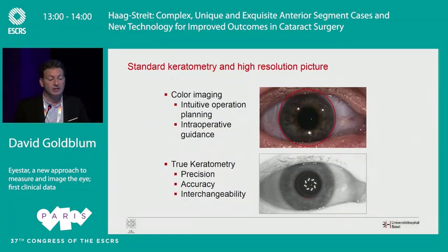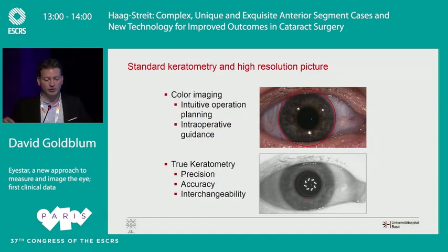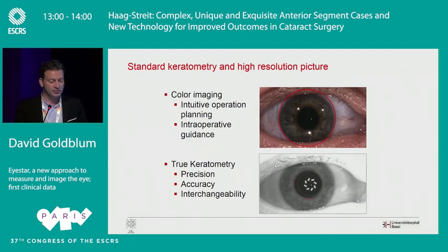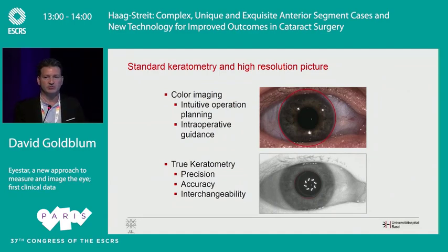It takes an image — high quality pictures, color pictures and red-free black and white. It measures white-to-white, it measures the pupil. It takes keratometries, true keratometries with 16 diodes. And that takes within milliseconds. So everything is automated — you don't have to click more than once, and the machine does the rest for both eyes.